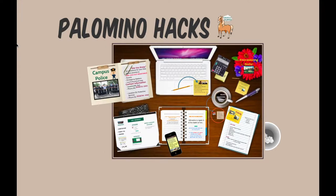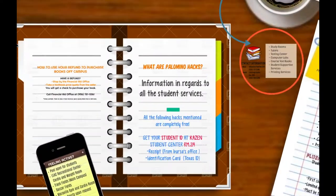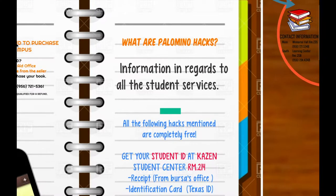I will be talking about the different hacks that you as a student can find in LCC. To be able to receive these hacks you will first need to get your student ID, which you can get at the Office of Student Life at the Cason Student Center in room 214. The things you will need are your class receipt from the Bursar's Office and any kind of picture ID.